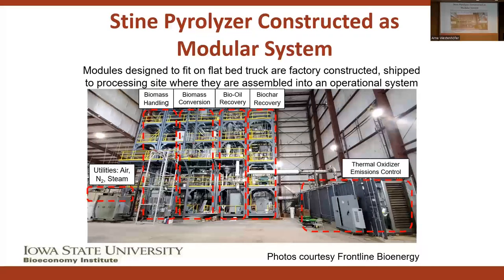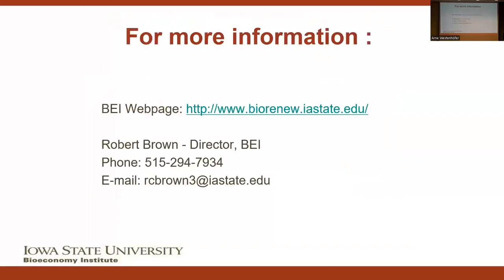This past spring, we were notified that the Bioeconomy Institute carbon removal team was to receive a $1 million XPRIZE milestone award. There were 15 awarded across the world, several in the United States, but we were the only one to receive one in the Midwestern United States. Illustrated here is one of the systems used to generate the pyrolysis data for our application. Here we show the Stein pyrolyzer in place — it was actually built as modules, with the red dashed lines indicating the various modules: a biomass handling system, a biomass conversion module, a bio-oil recovery module, and the biochar recovery itself with additional ancillary utilities provided.